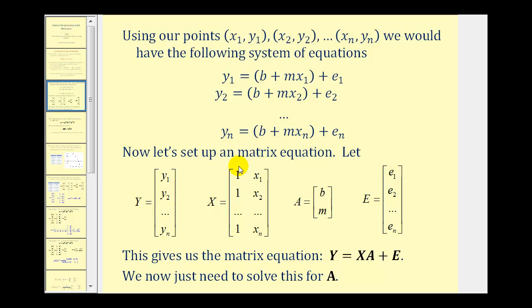To set up the matrix equation, we start by forming matrix Y, which contains the given y values. Matrix X will have two columns: a column of ones and a column of the given x values. Matrix A will contain the y-intercept and slope, and matrix E will contain all of the errors. This gives us the matrix equation y = XA + E. Our goal is to solve this equation for A, but first let's see why those ones in matrix X are necessary.